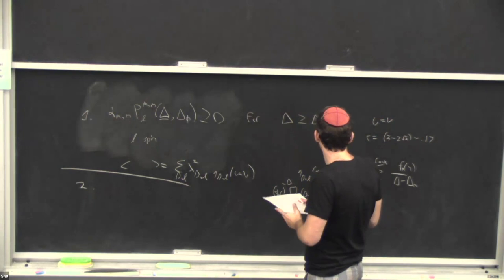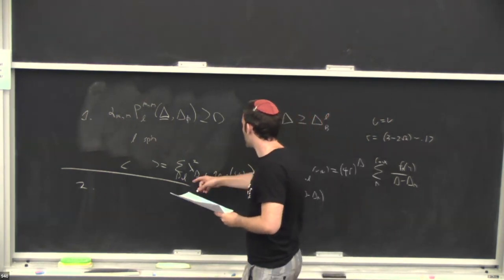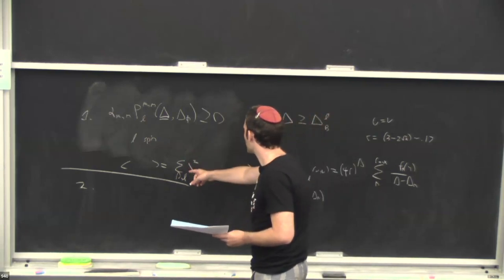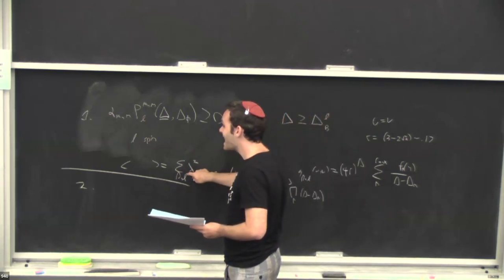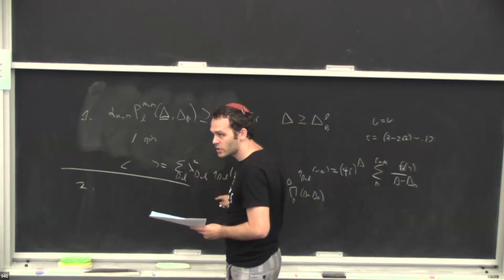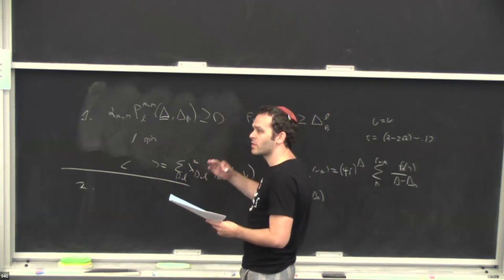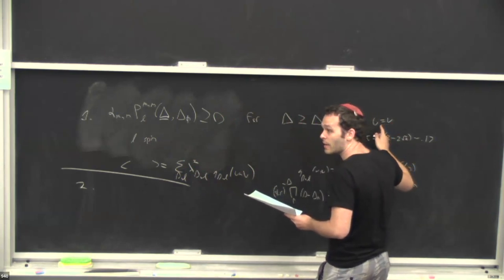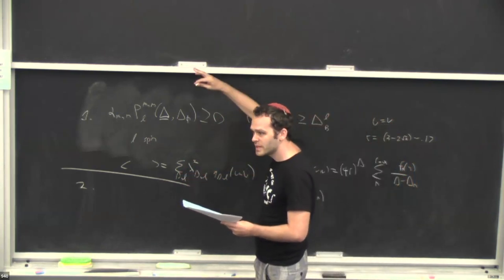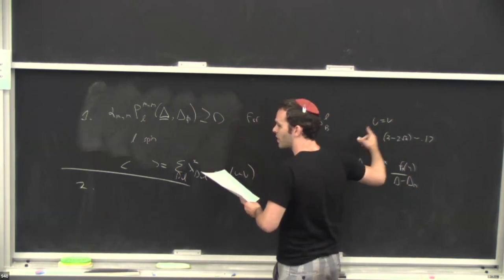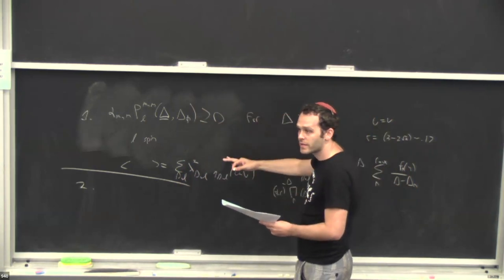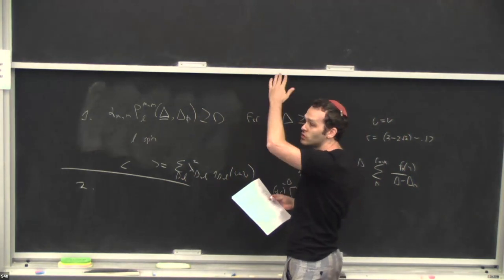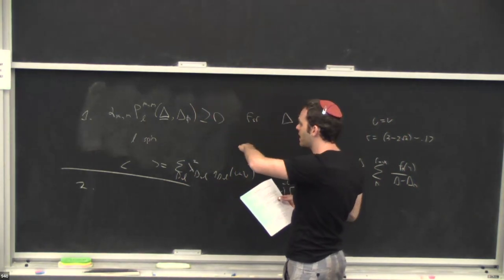The truncation on spin is justified because, as proven in the previous lecture, the tail of the block expansion — including OPE coefficients — drops off exponentially quickly, like R^delta. For really large spin, the contribution drops like R to the delta, and since R is small, this is exponentially fast. That's why the bootstrap is not sensitive to very large dimension or very large spin operators, justifying the spin cutoff.